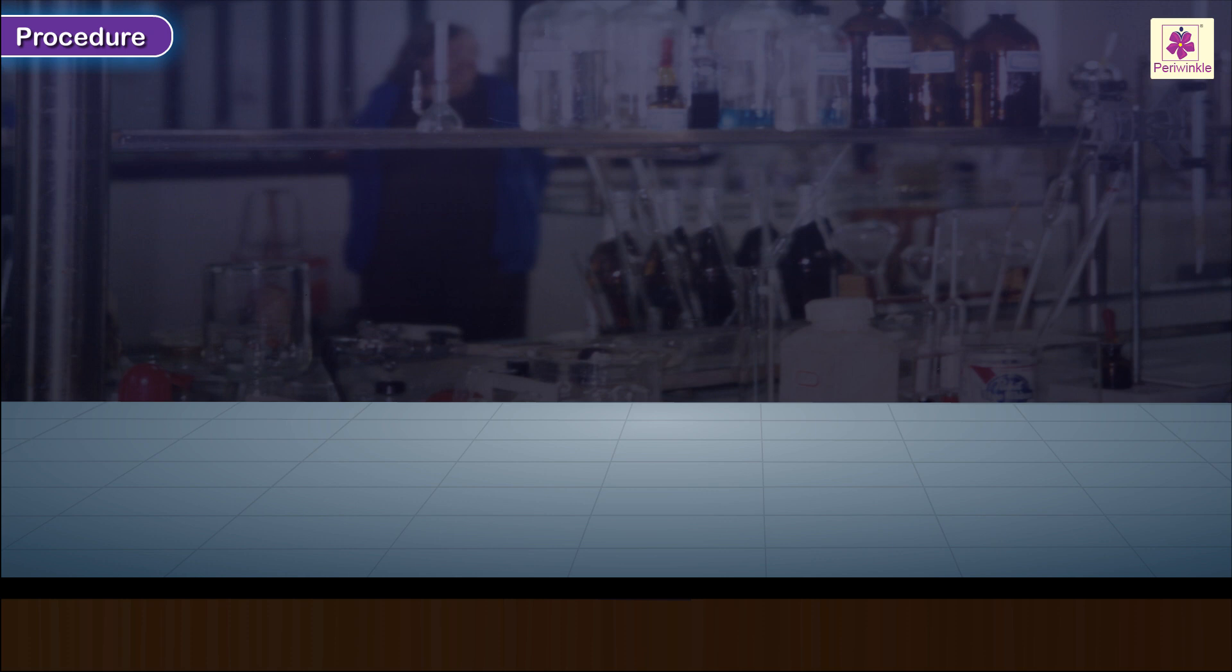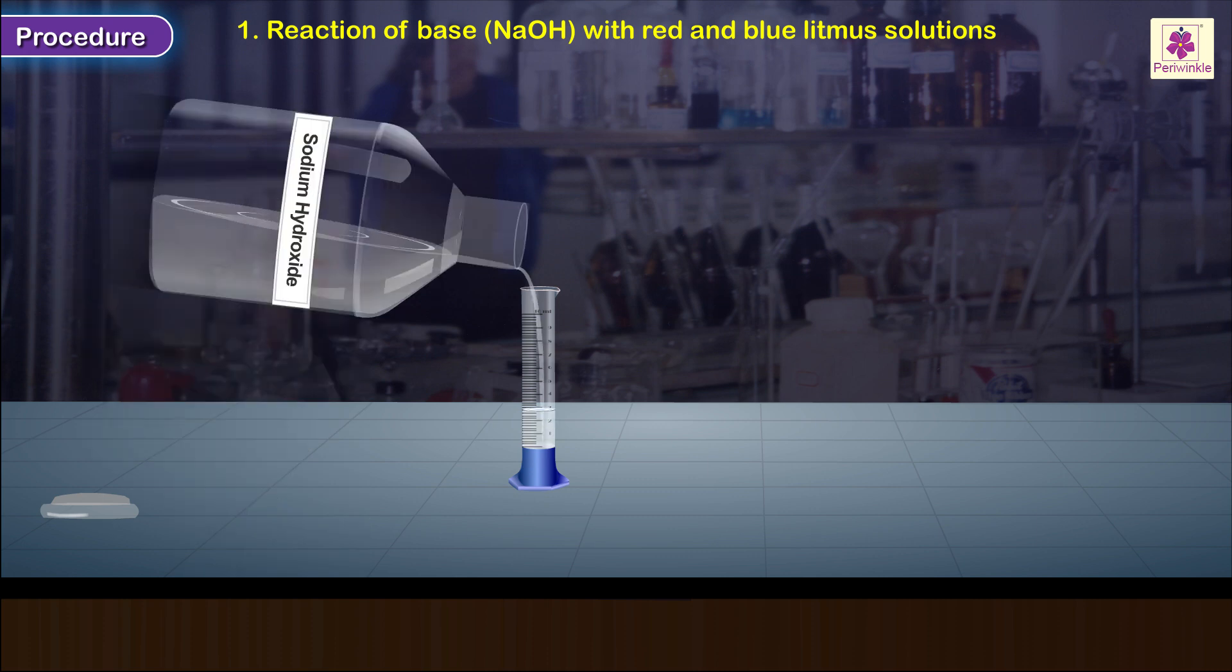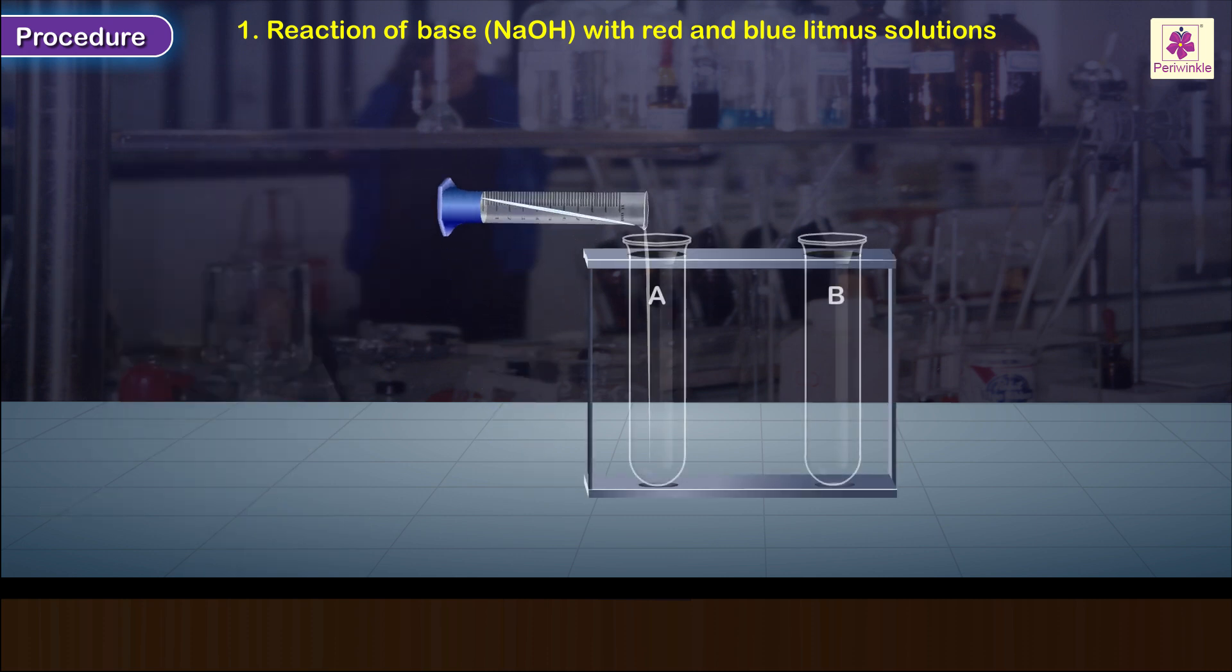Procedure to study some properties of bases. One: reaction with red and blue litmus solutions. Take two test tubes, each with about 2 ml of solution of sodium hydroxide. Place them in a test tube stand.